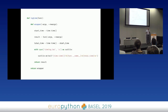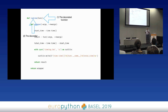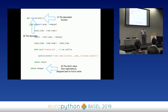Looking at our decorator definition: we have our decorated function coming in as 'func', we have the decorator log_time, and the result of invoking log_time on our function gives us back 'wrapper', which is replacing our original function.